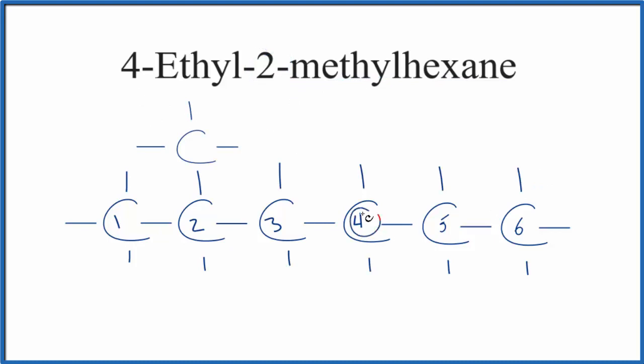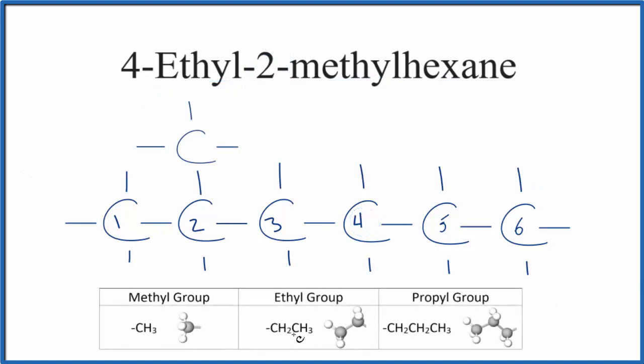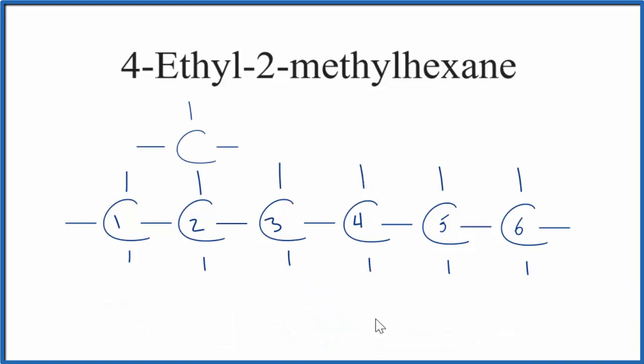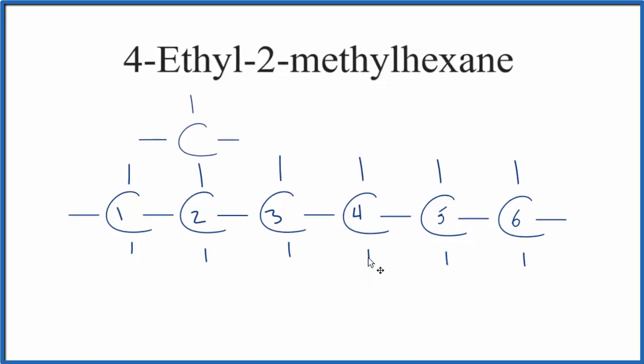On the fourth carbon, we're going to put an ethyl group. An ethyl group is a carbon attached to another carbon with hydrogen atoms. We'll put this ethyl group on the fourth carbon. We could put it on top or below since these bonds between carbons can rotate. Let's put it down here.